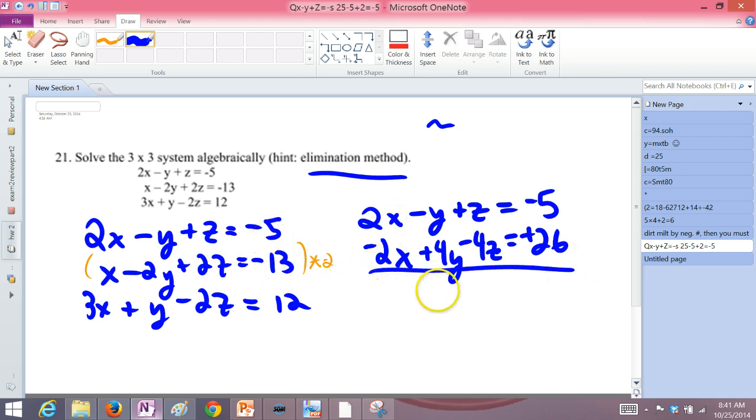Add these together and the x's are gone. We'd have 3y because negative 4z. We'd have negative 3z because 1 minus 4. On the other side, we'd have 21. So that's an equation that should be true about y and z.